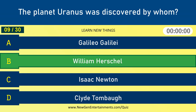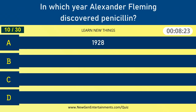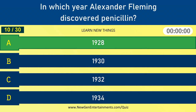The planet Uranus was discovered by whom? William Herschel. In which year did Alexander Fleming discover Penicillin? 1928.